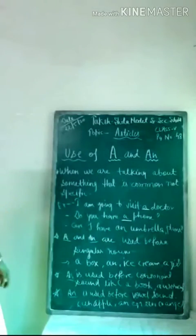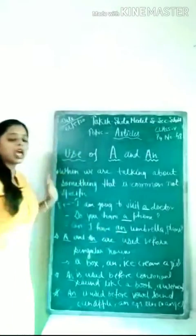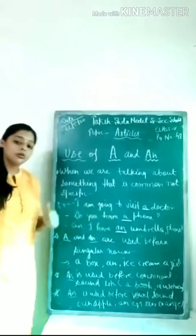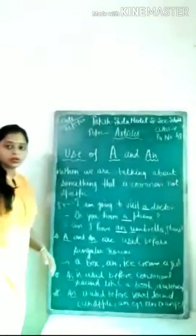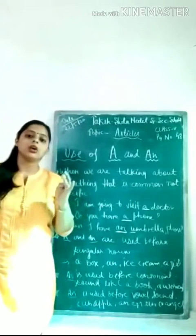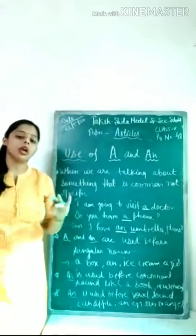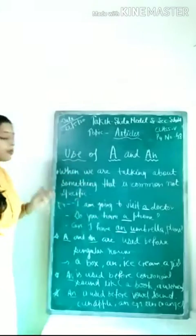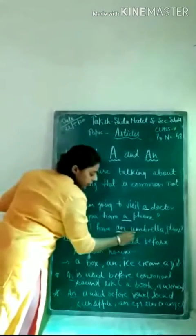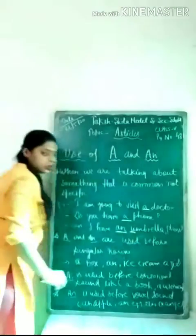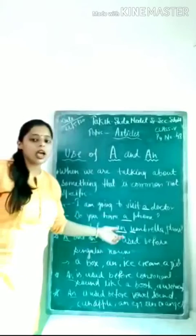'Can I have an umbrella please?' Here we have used An. Why? Because the word 'umbrella' starts with the letter U. U is a vowel — A, E, I, O, U. These are all vowels. We use An with these. So since umbrella starts with U, a vowel, we use An.